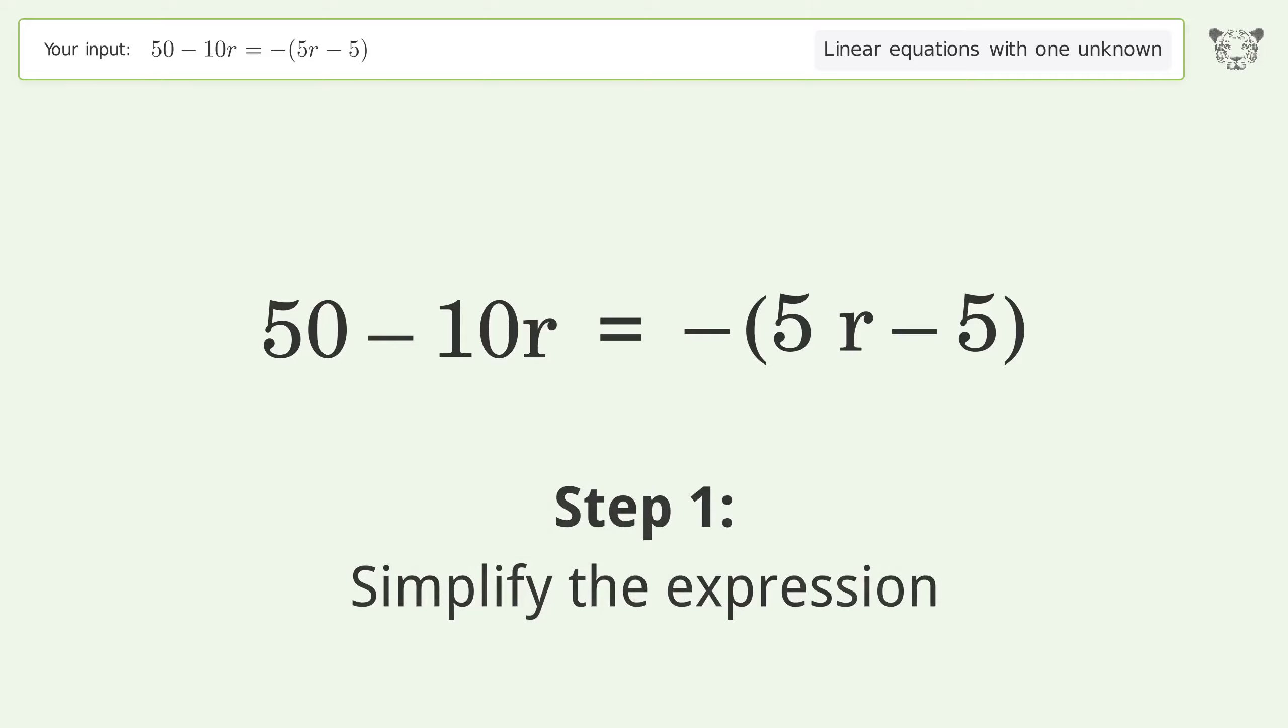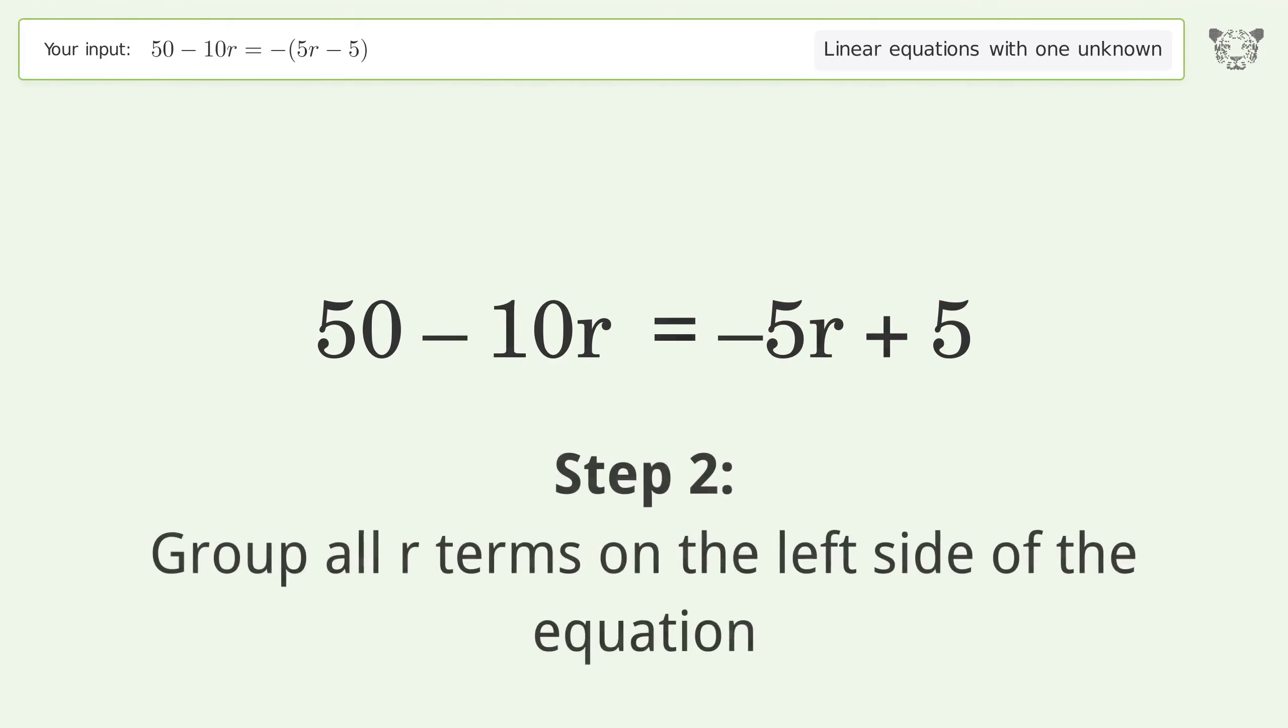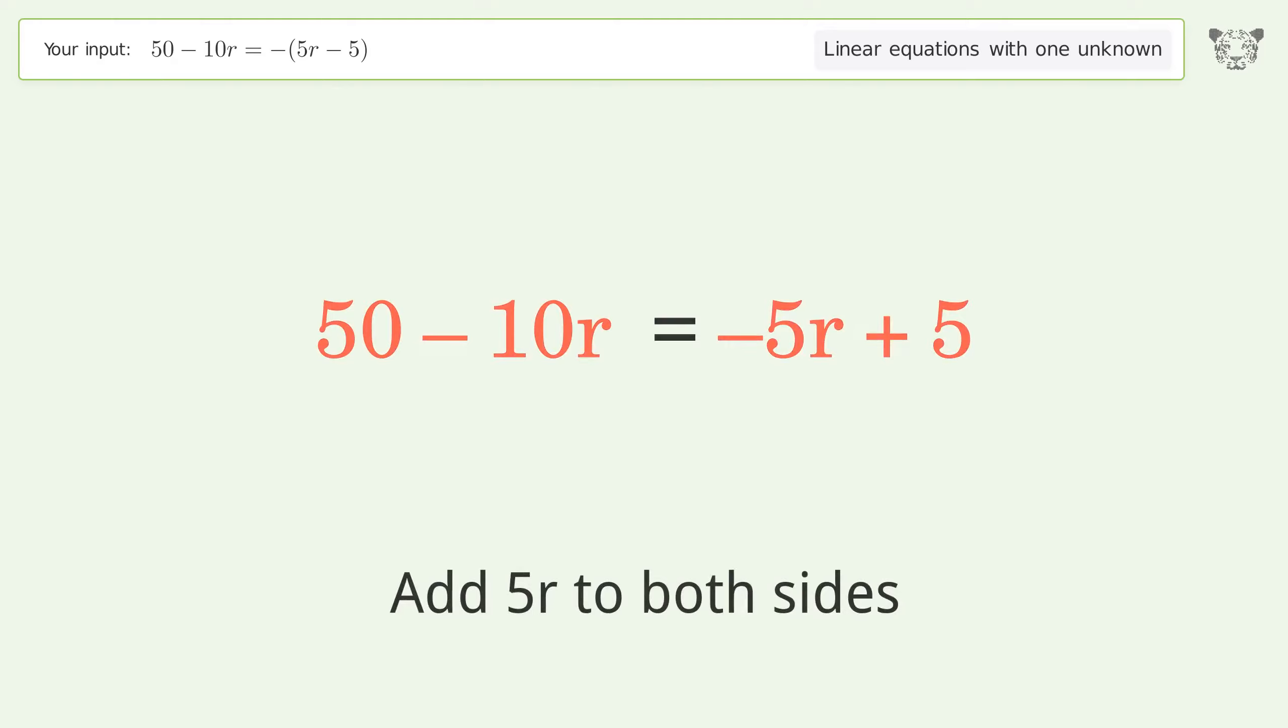Simplify the expression. Expand the parentheses. Group all r terms on the left side of the equation. Add 5r to both sides.